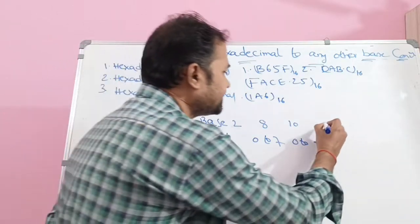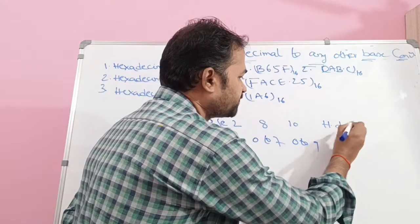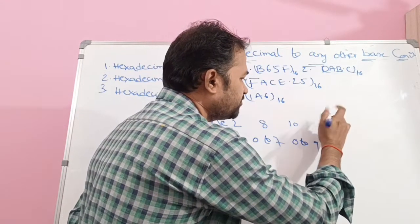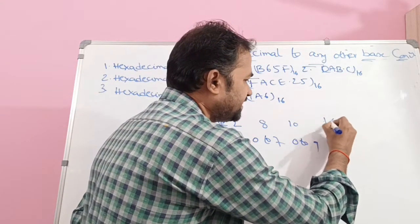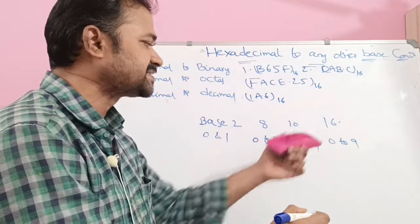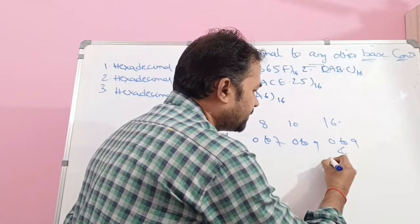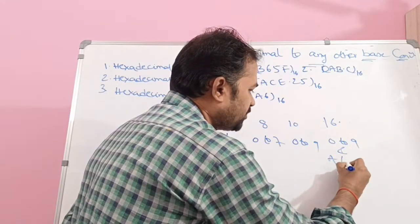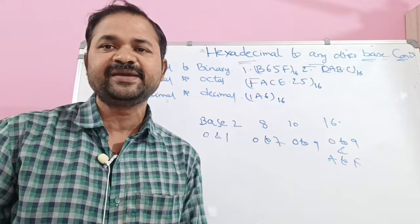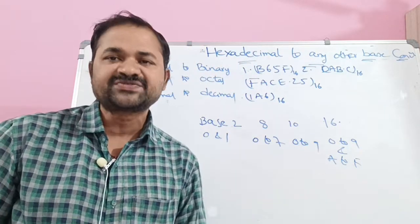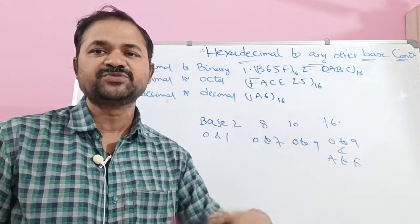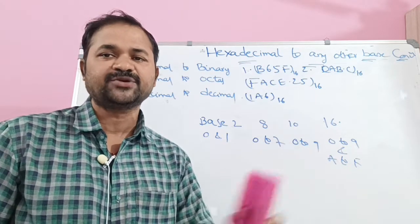The last one is the hexadecimal number system. Hexadecimal number system has a base value of 16. It mainly contains symbols from 0 to 9 and A to F. A means 10, B means 11, C means 12, and likewise F means 15. It totally contains 16 symbols from 0 to 9 and A to F.